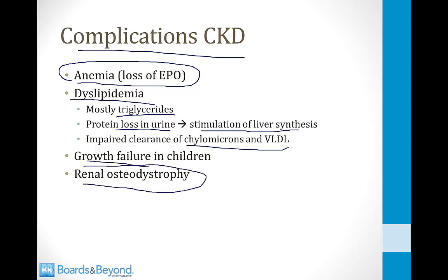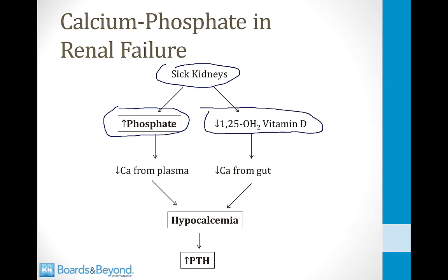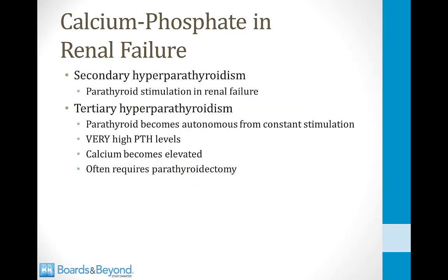Renal osteodystrophy arises from calcium and phosphate problems in renal failure. Sick kidneys can't excrete phosphate (levels rise) and can't activate vitamin D. High phosphate pulls calcium out of plasma, and low vitamin D decreases calcium absorption from the gut, causing hypocalcemia. Hypocalcemia then chronically stimulates the parathyroid gland, causing secondary hyperparathyroidism.